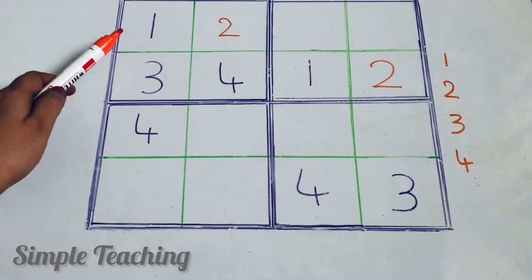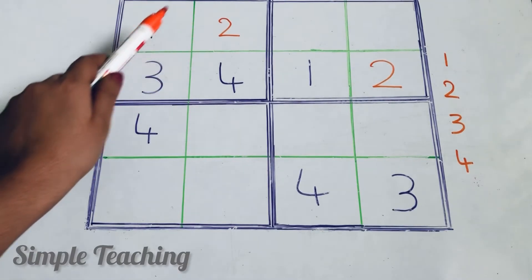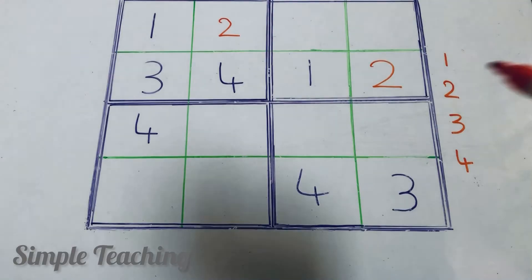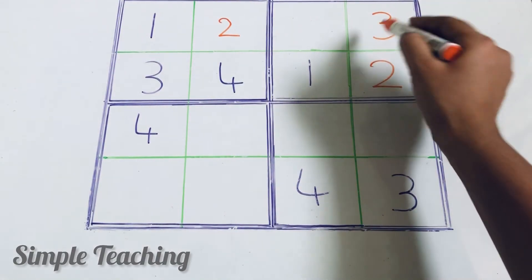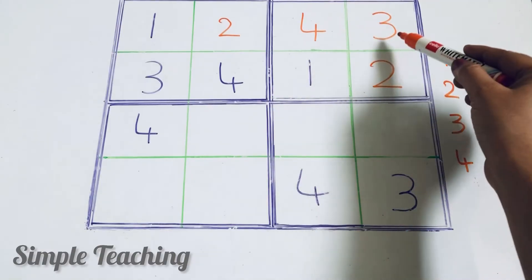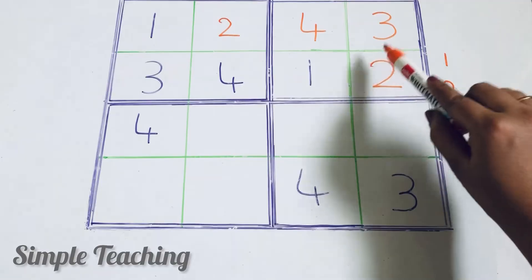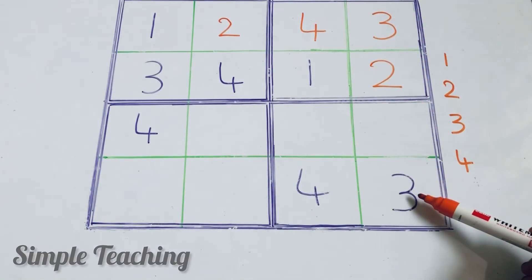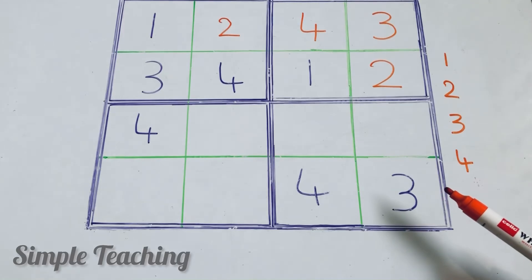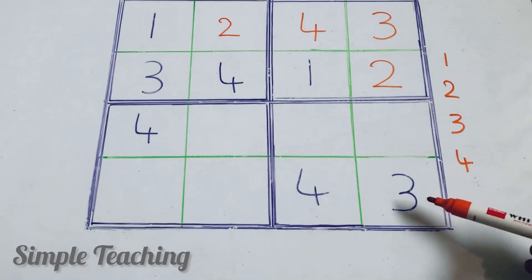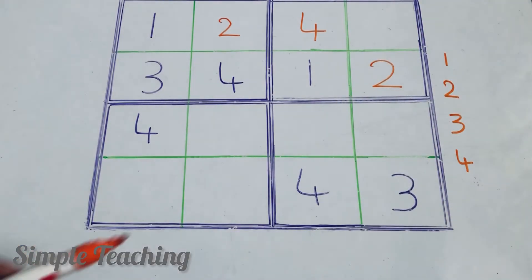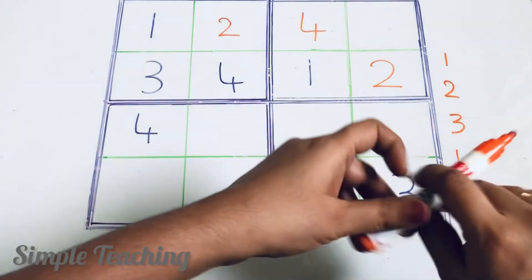Now let us take this row. Here 1 and 2 are present — what are missing? 3 and 4 are missing. So how to write 3 and 4? Can we write 3 here? Check — in this column there is already another 3, so 3 is repeated. Our rule says the number must be written only once — it should not be repeated. So this is wrong. In the same way, the 4 is also repeated, so that arrangement is wrong.